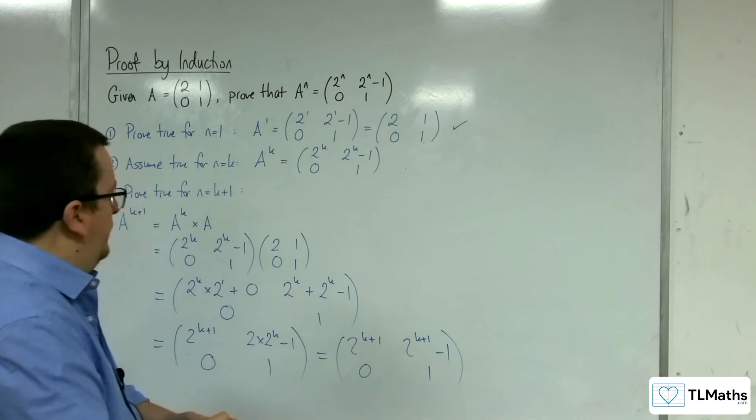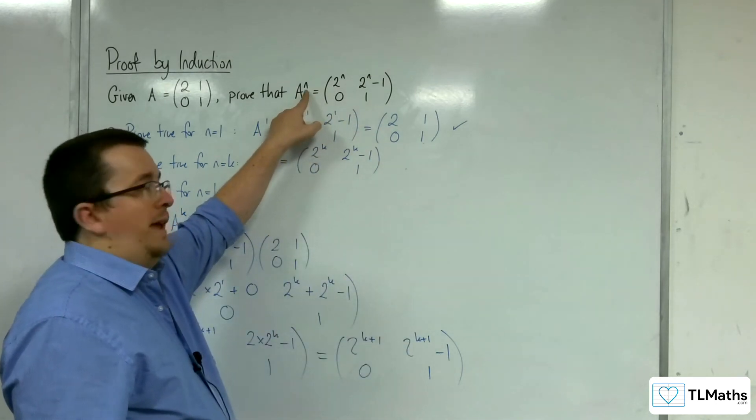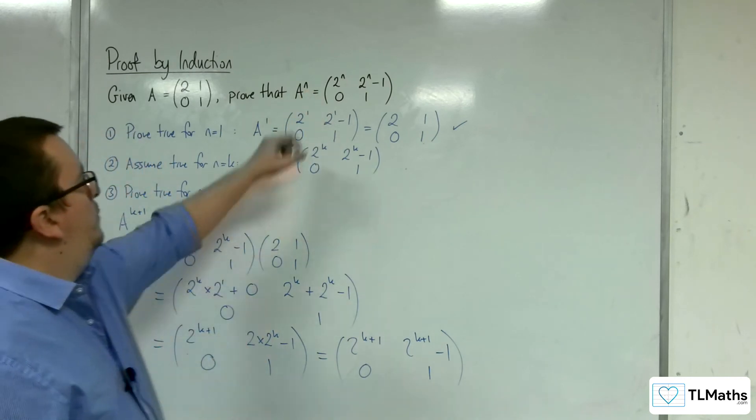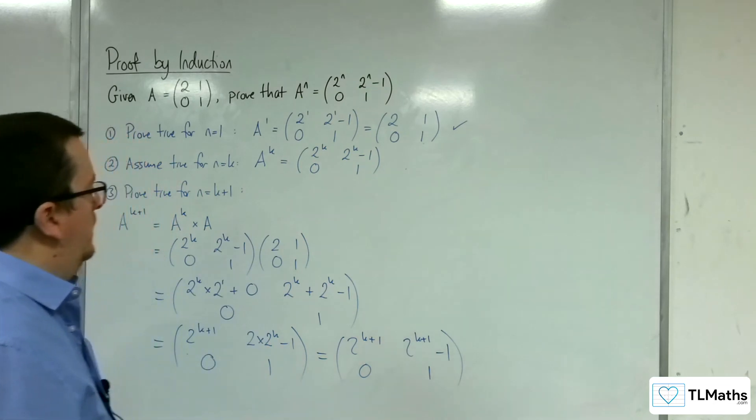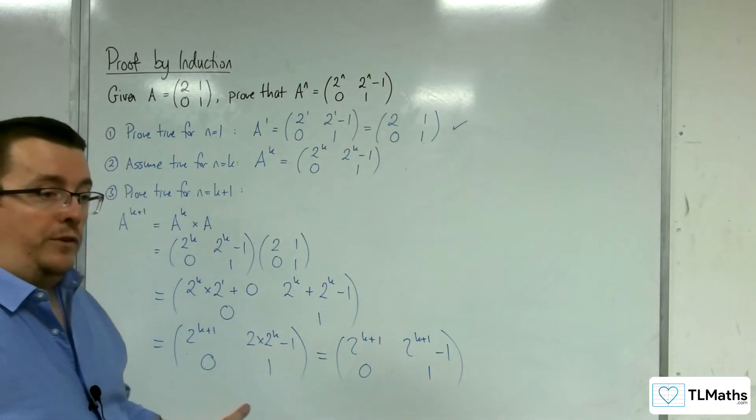You can see that this is precisely what it would be if I'd substituted n for k plus 1. Substituting n for k plus 1 would have given us that matrix there, and so that proves it.